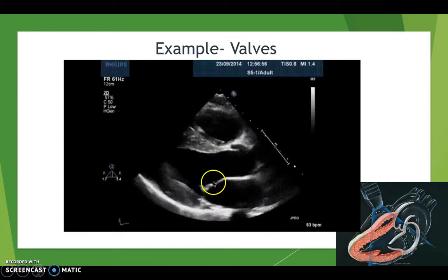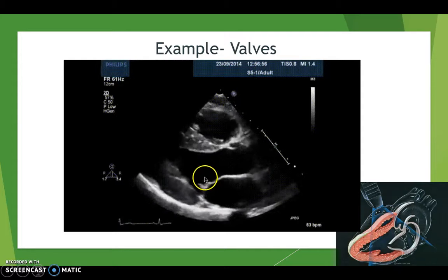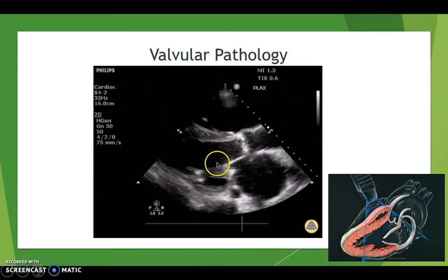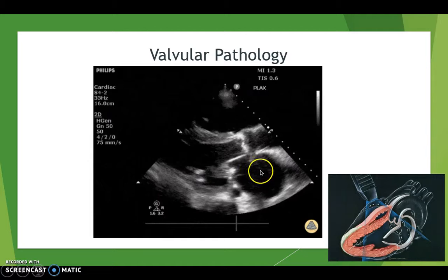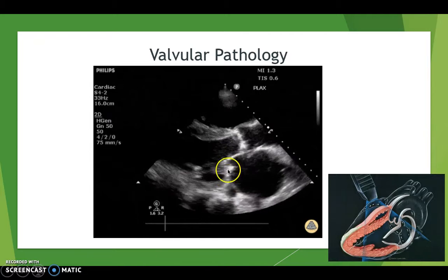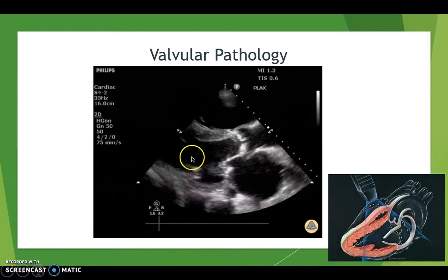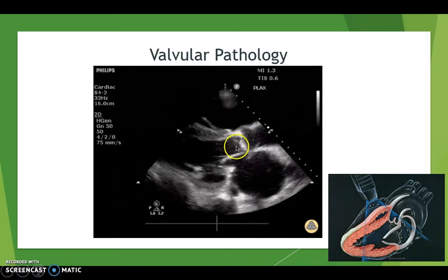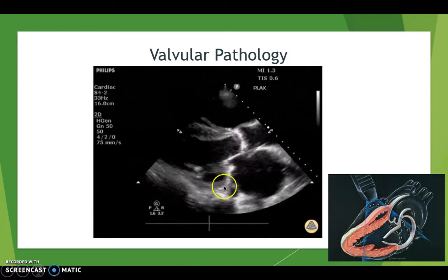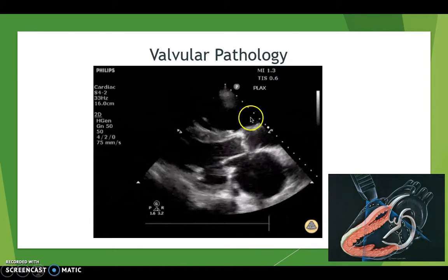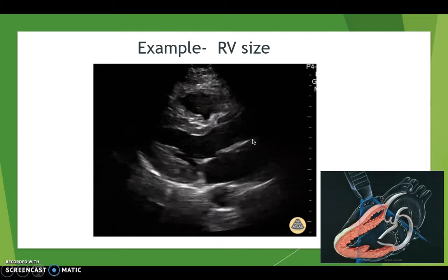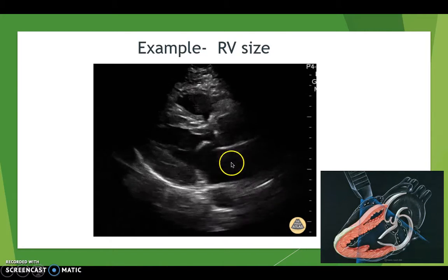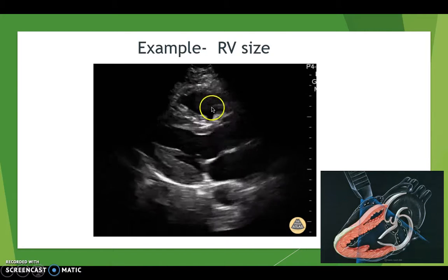Here's an example of what good valves look like. These mitral valves and aortic valves open and close like nice windshield wipers — very beautiful. Then here is a problem with the valves: the mitral valves are barely moving, and the aortic valves look very sclerotic. These are not the nice valves we just saw a moment ago.